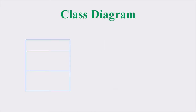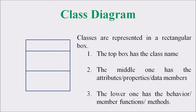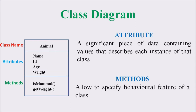A class can be represented by using a Class Diagram with a three-chamber rectangle. The topmost box is designed to mention the class name. The middle chamber represents the attributes or data members, and the lowest one has the behavior, functions, or methods related to a class. So the top region represents the class name, the second region represents the attributes, and the bottom region represents the methods or functions associated with a particular class.